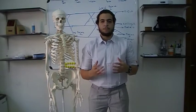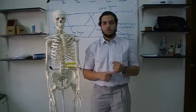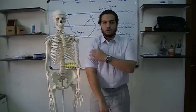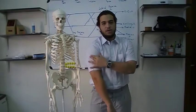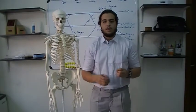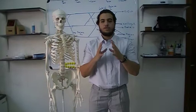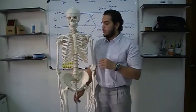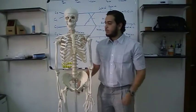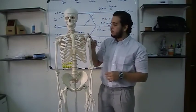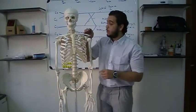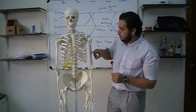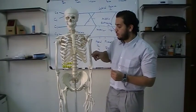Continuing this lecture, we have the deltoid muscle. The deltoid muscle is a very well-known muscle — it is the shoulder muscle. It's called deltoid because it's triangular in shape. It starts at the lateral third of the clavicle, the acromion process, and the spine of the scapula. It basically comes from there and attaches to a tuberosity called the deltoid tuberosity on the humerus.